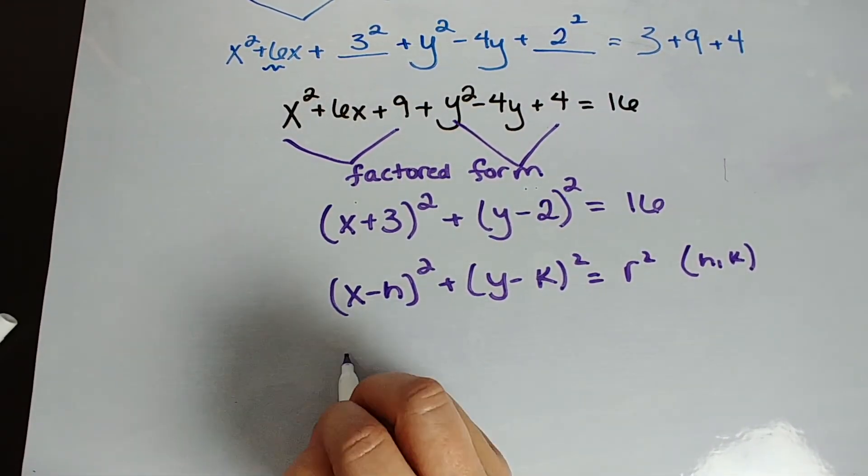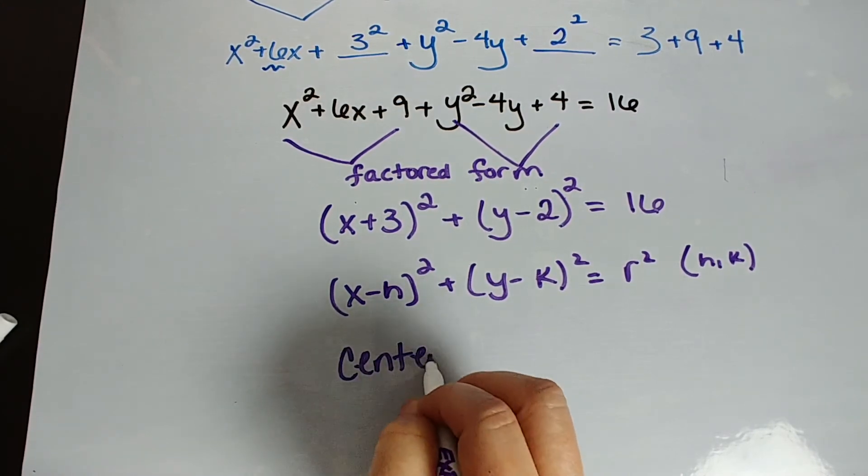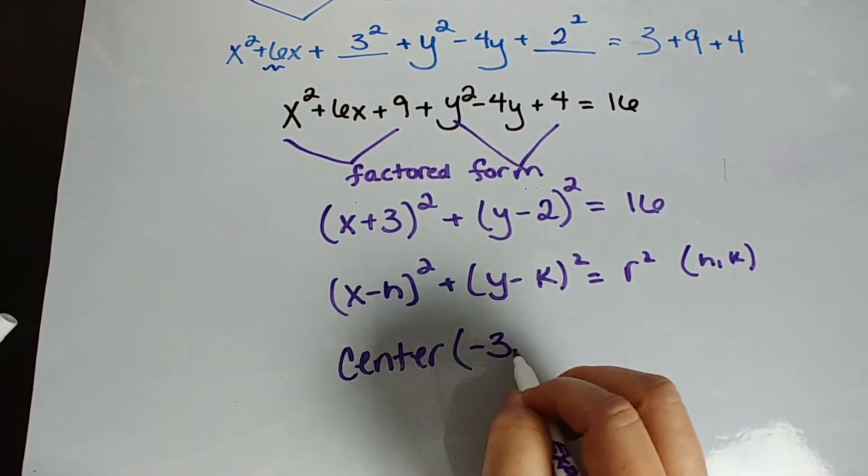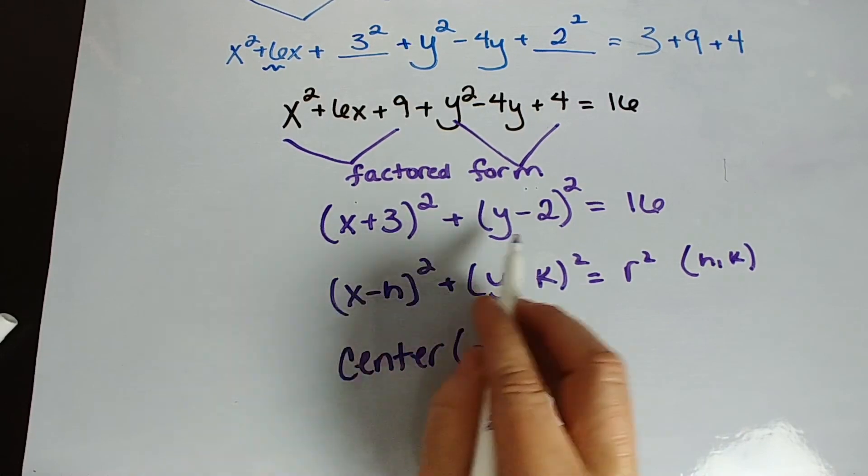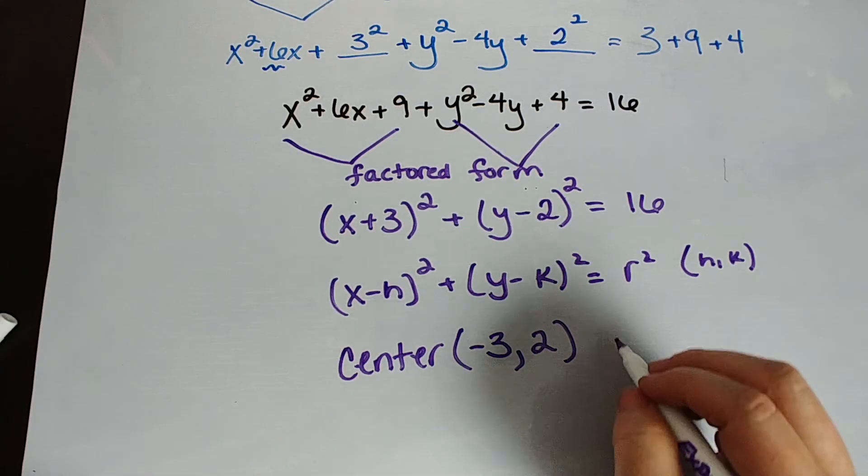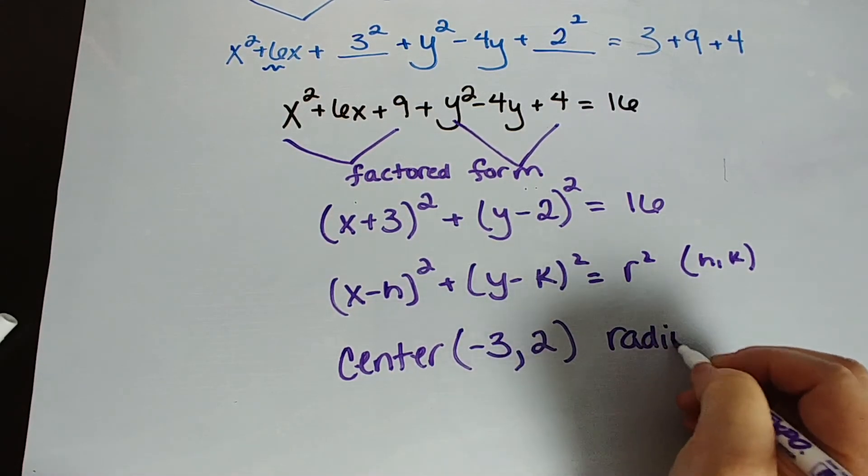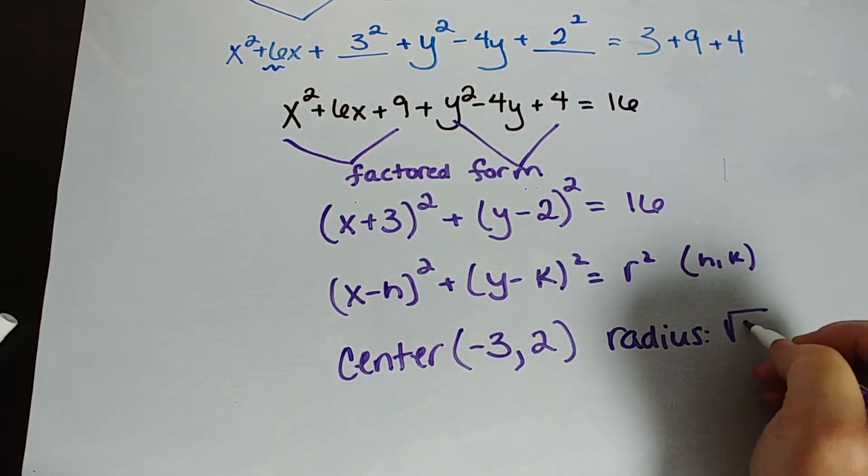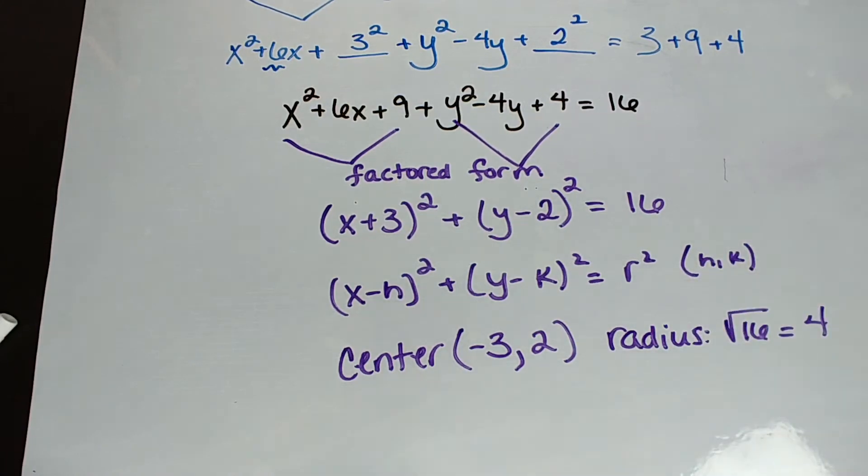Using all of that knowledge, I see that my center for this circle, even though it didn't ask, is negative 3, 2. Remember, it's always opposite signs. It's x minus h minus k. So the negative of h, the negative of k. And my radius, I know it didn't ask, but in case it does in future problems, is the square root of 16, which is positive 4.